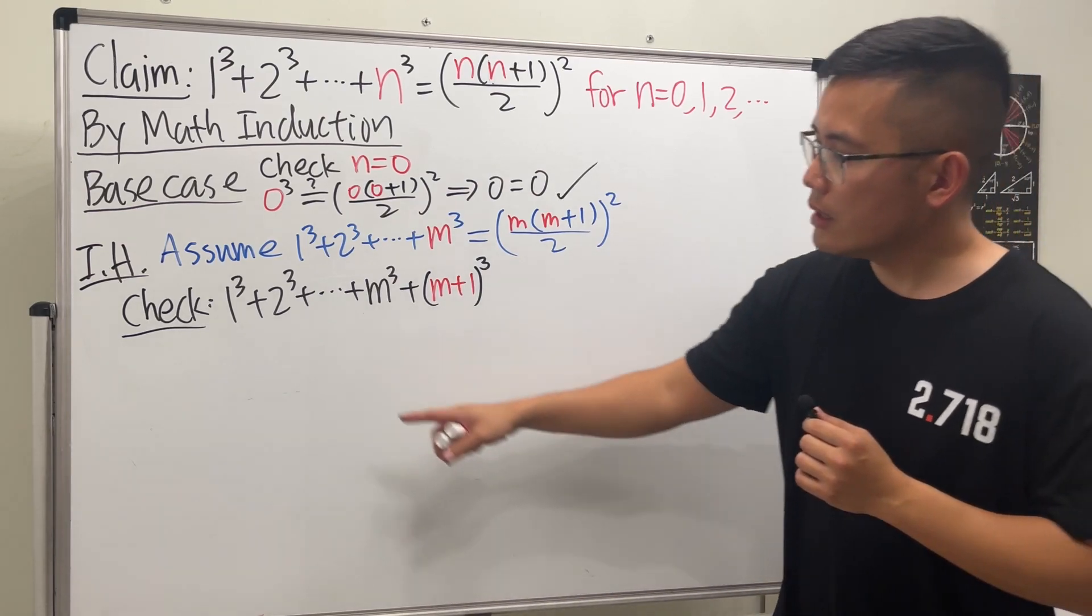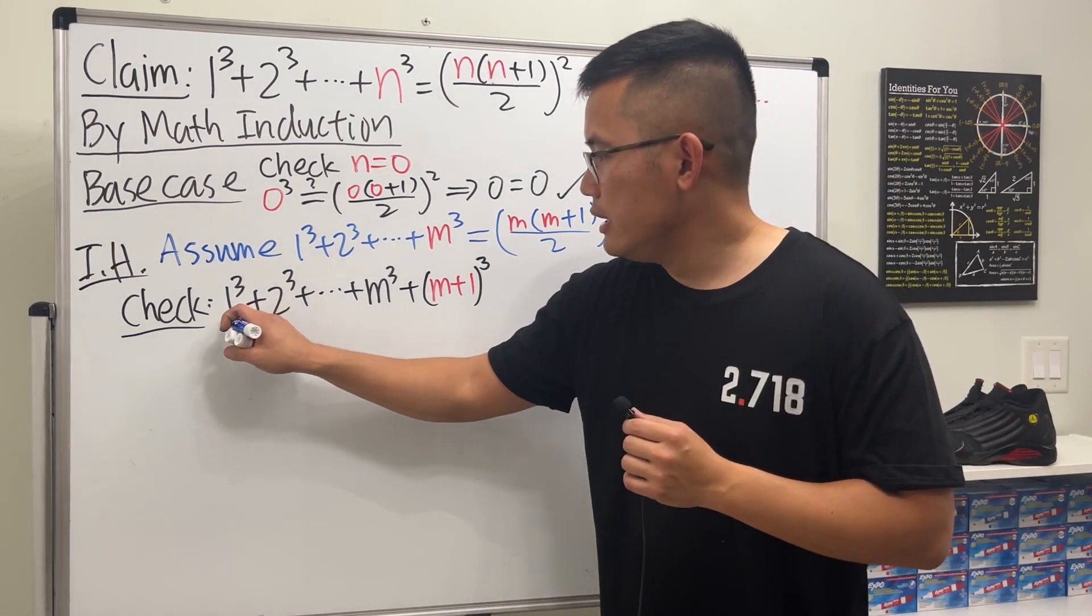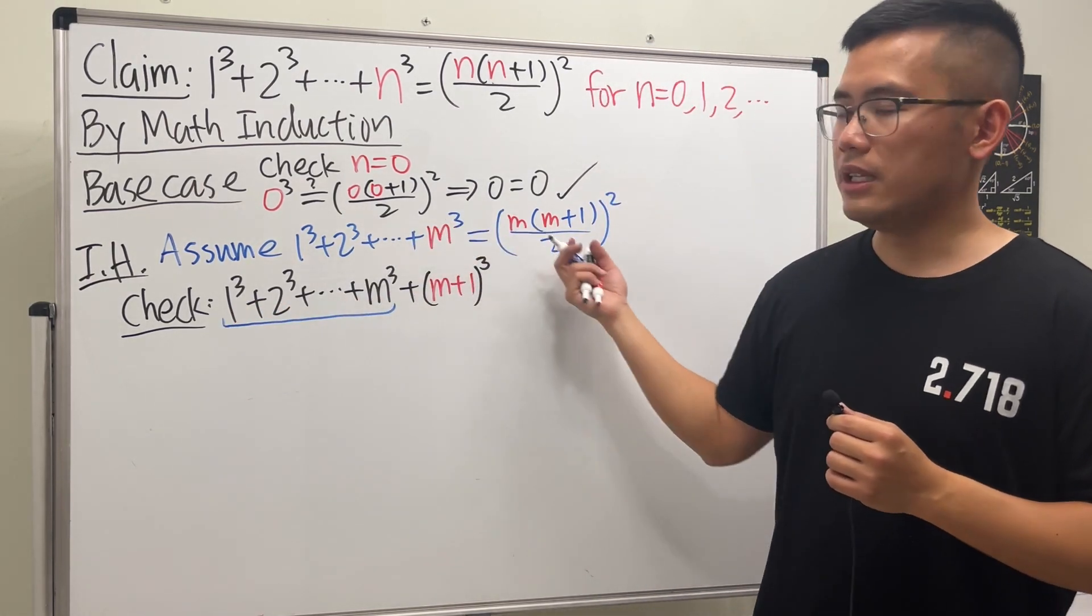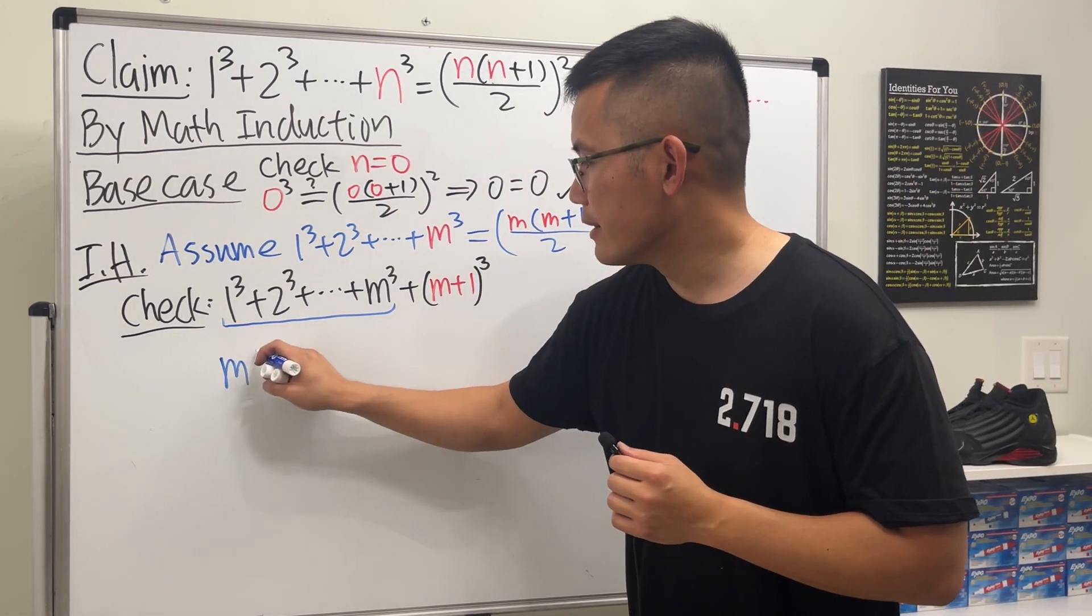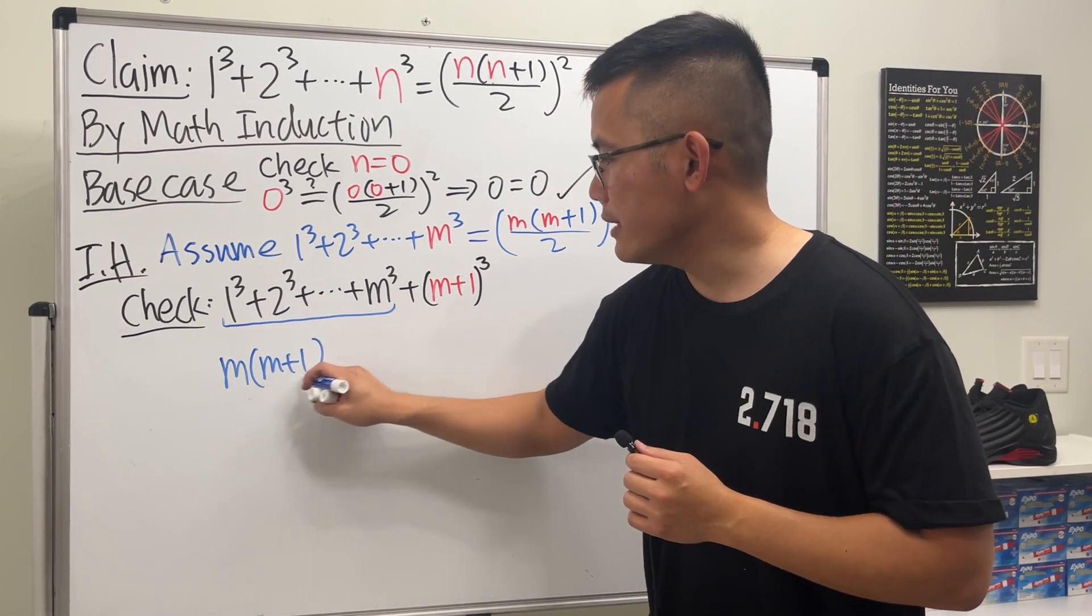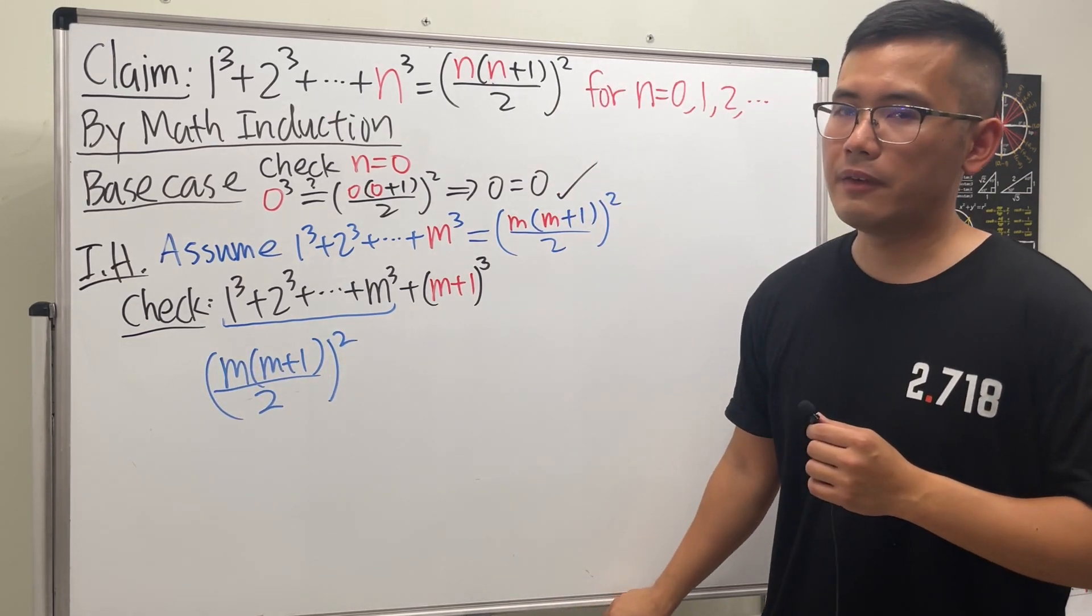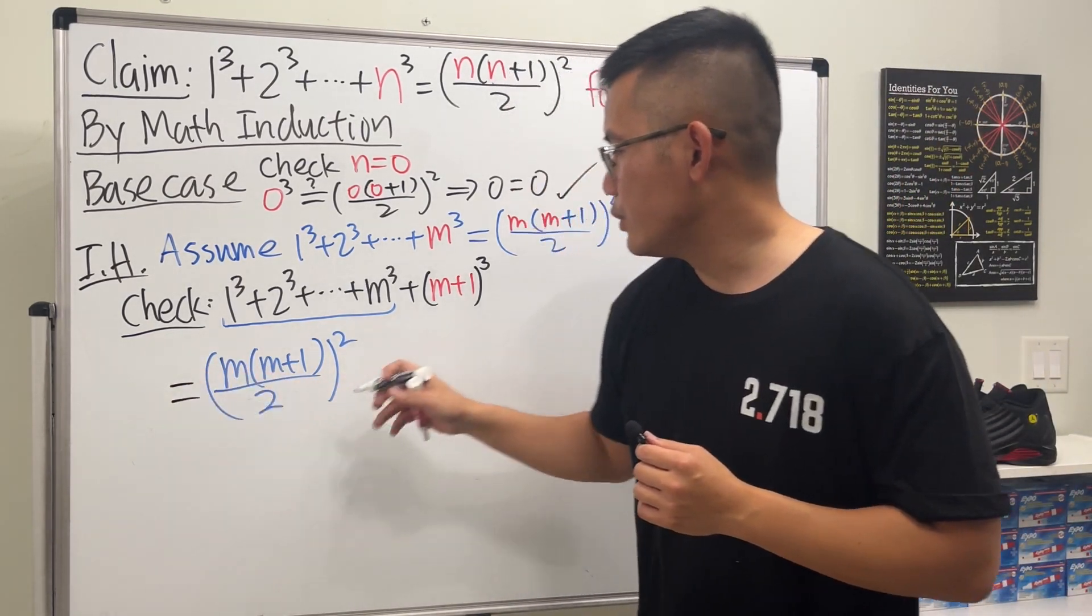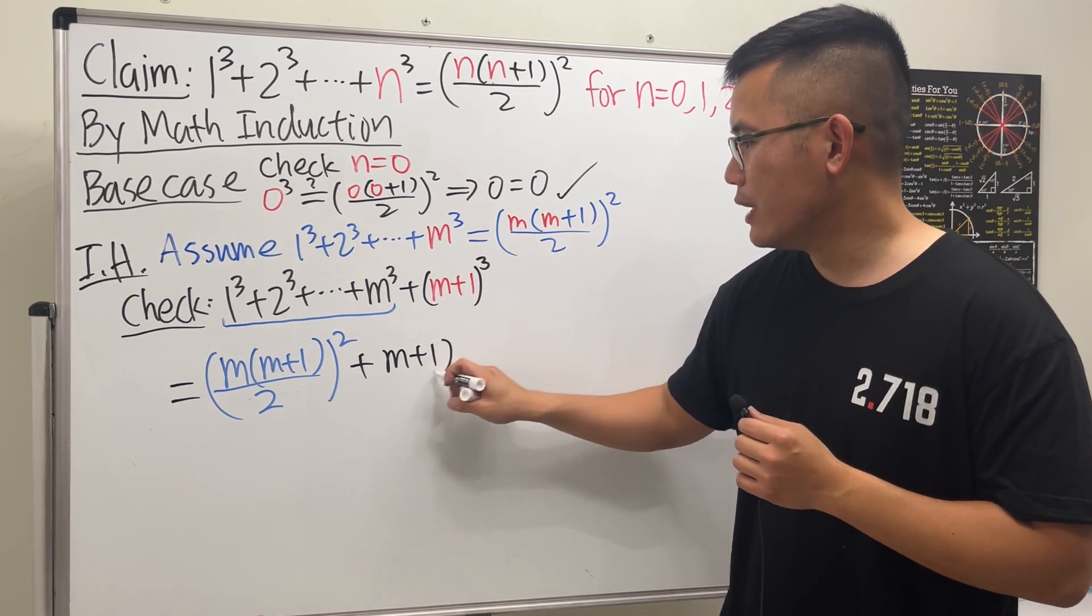Okay, so let's see. We have this right here, but guess what? These numbers together, thanks to the inductive hypothesis, we can legitimately say that this is equal to m(m+1)/2, and then squared, thanks to the inductive hypothesis. And then we just have this part, right? So we add (m+1)³.